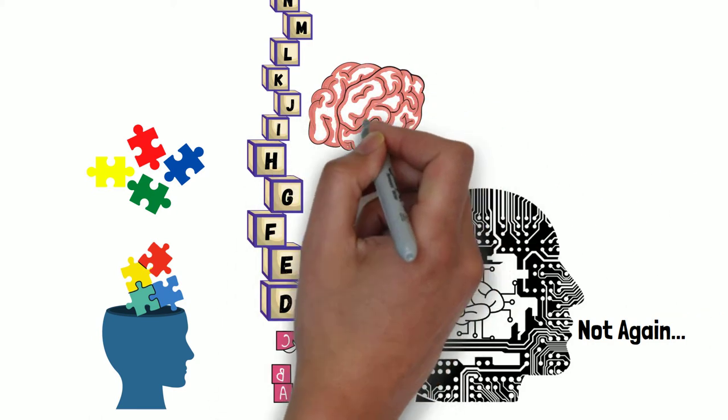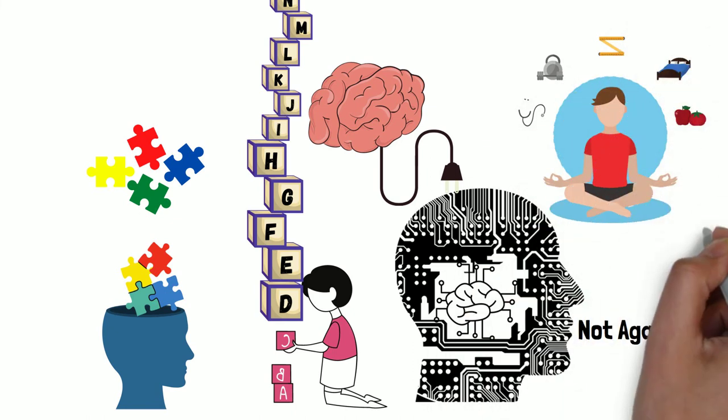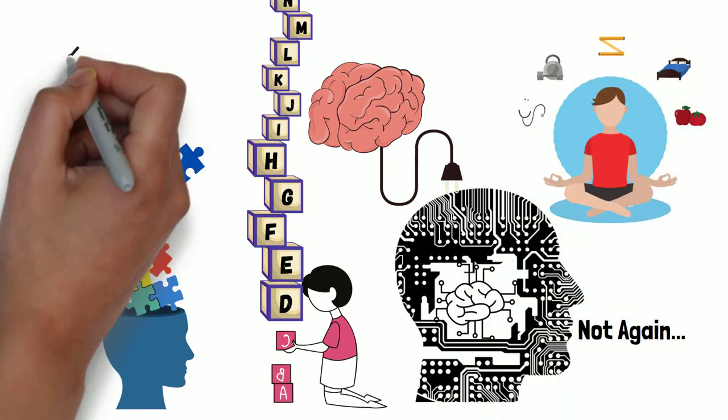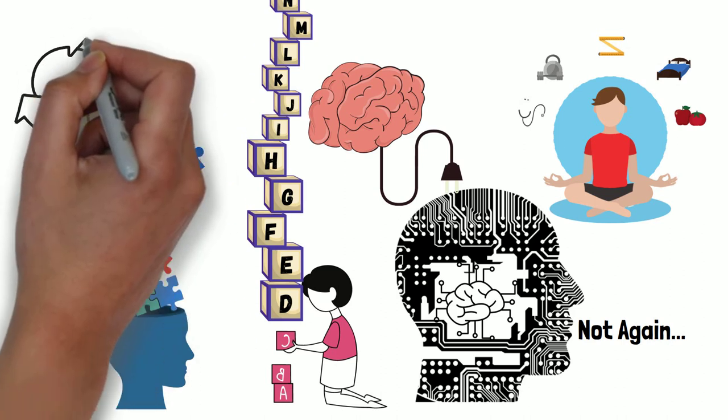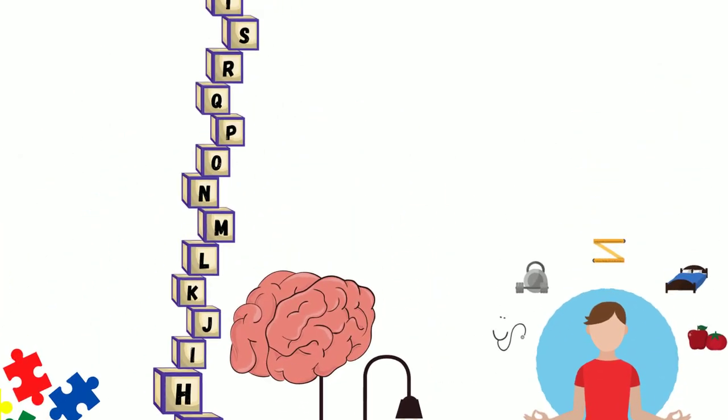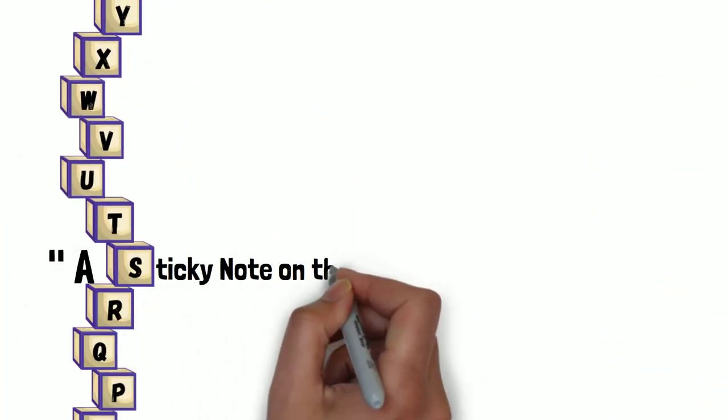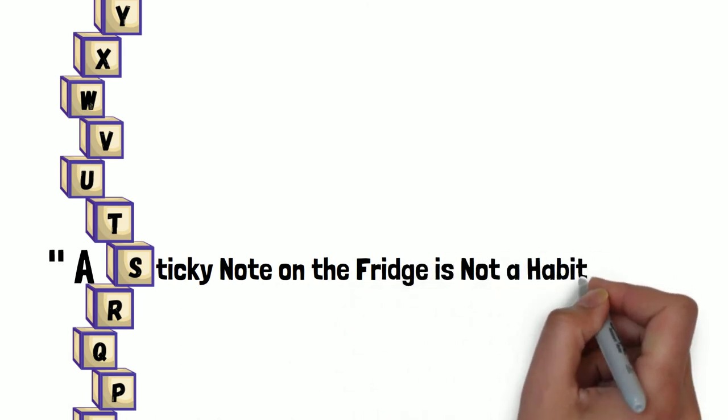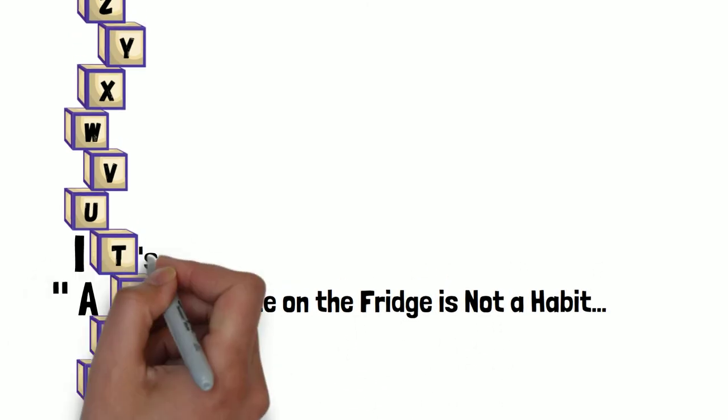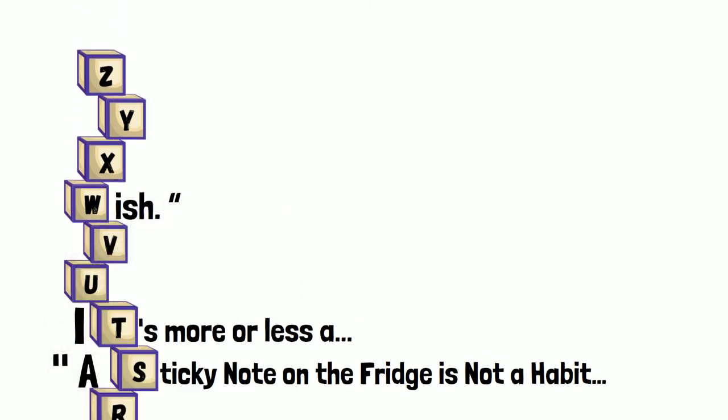So, after you're six or seven and you want to change programming in your life, a way of doing it is the conventional way—creating a habit, repeating something on almost a religious level. Let me just make it clear: a sticky note on the refrigerator is not a habit. A sticky note on the refrigerator is more or less a wish. Every time you look at it, you know, I wish that would be true. But that's not a habit.